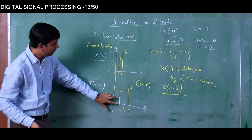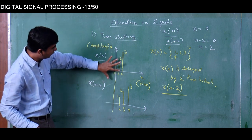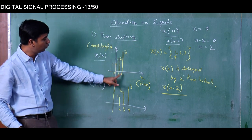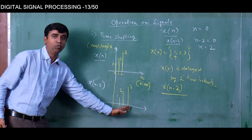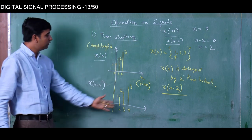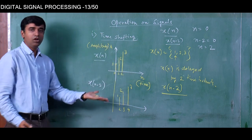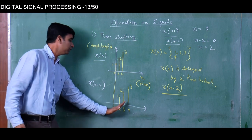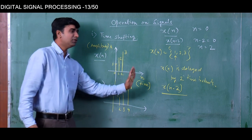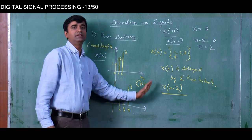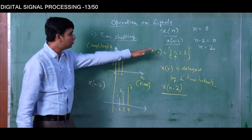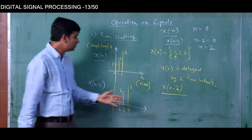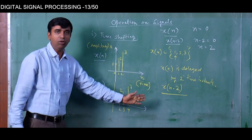The value at 0 has now shifted to 2, the value at 1 — which was 2 — has shifted to 3, and the value at 2 has shifted to 4. This is how the time shifting operation occurs. This is called a delay because earlier the sequence was starting at 0, and now the sequence is starting at the 2nd instant — the signal is starting at a delayed instant of time.